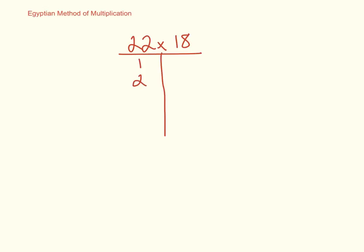So 1 doubled gives me 2, 2 doubled gives me 4, 4 doubled gives me 8, 8 doubled gives me 16. 16 doubled gives me 32, that's greater than 22, so I'm going to stop at 16.